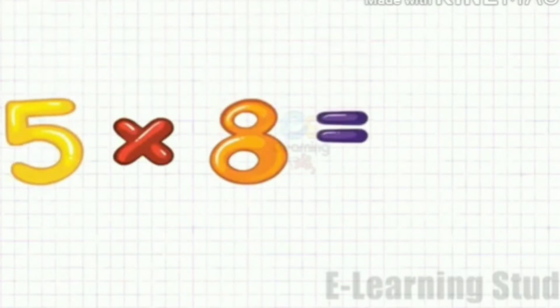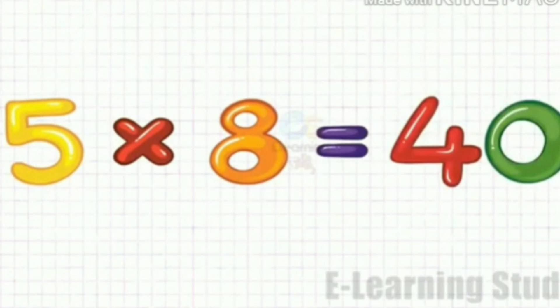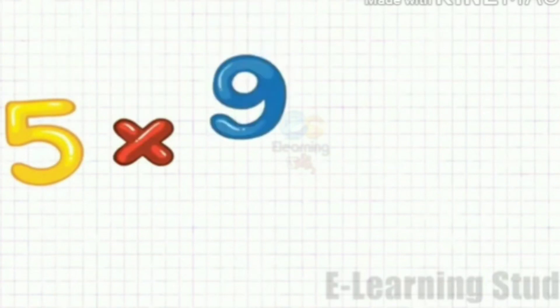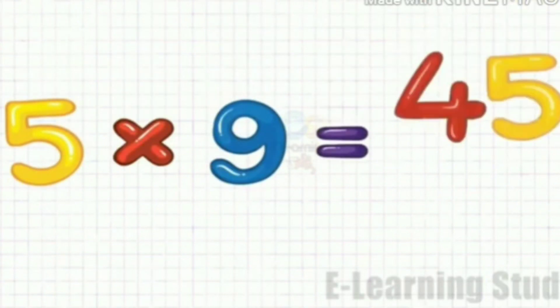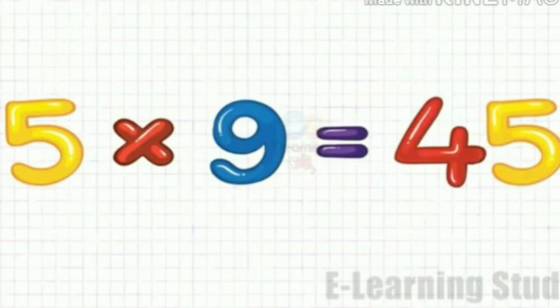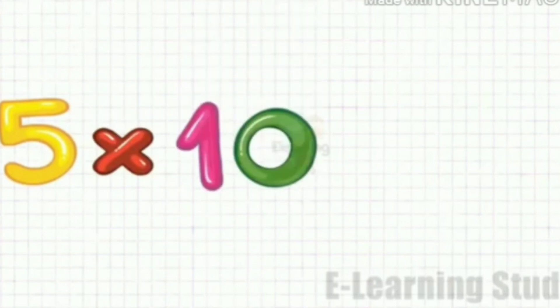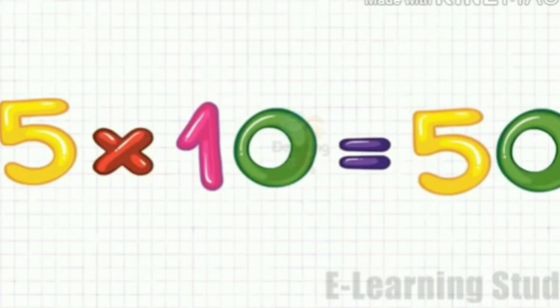5 times 8 equals to 40. 5 eights are 40. 5 times 9 equals to 45. 5 nines are 45. 5 times 10 equals to 50. 5 tens are 50.